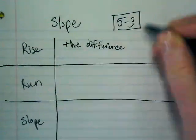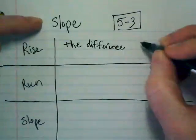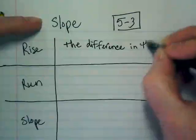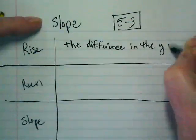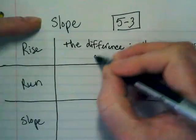Rise is the difference in the y variables of two points on the line.